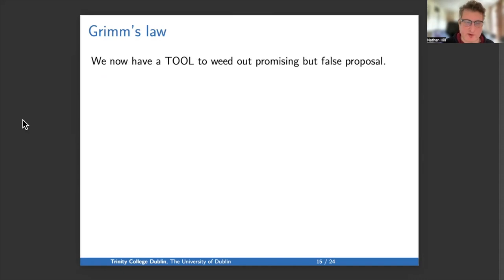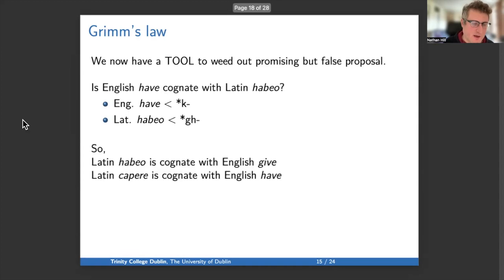And now, with Grimm's Law in place, we have a tool whereby we can weed out promising but false proposals. So if you just prima facie look at English have, is it cognate with Latin habeo, meaning exactly the same thing? They look so similar, must be related, right? But no, English H comes from K, as we've seen, whereas Latin H comes from a GH. So they can't be cognate. And instead, habeo is cognate with English give, and English have is cognate with Latin capere. I think that's a nice result. We have a generalization, and then if we believe our generalization, we can use that generalization productively.